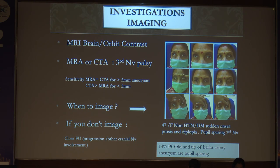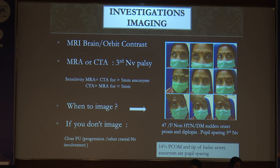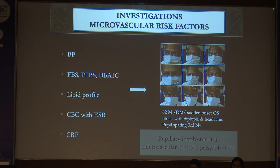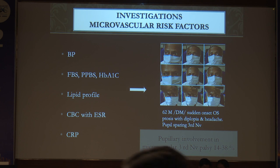The gold standard for investigation will be MRI brain and orbit with contrast. If there is a third nerve palsy, you should add an MRA or CTA — CTA is more sensitive for smaller aneurysms. If you don't image due to financial constraints, you have to follow these patients closely, weekly, to look for progression and any other cranial nerve involvement. If you suspect microvascular mononeuropathy, add investigations for risk factors: blood pressure, sugars, lipids, blood work especially ESR and CRP to rule out arteritic cranial nerve palsies.